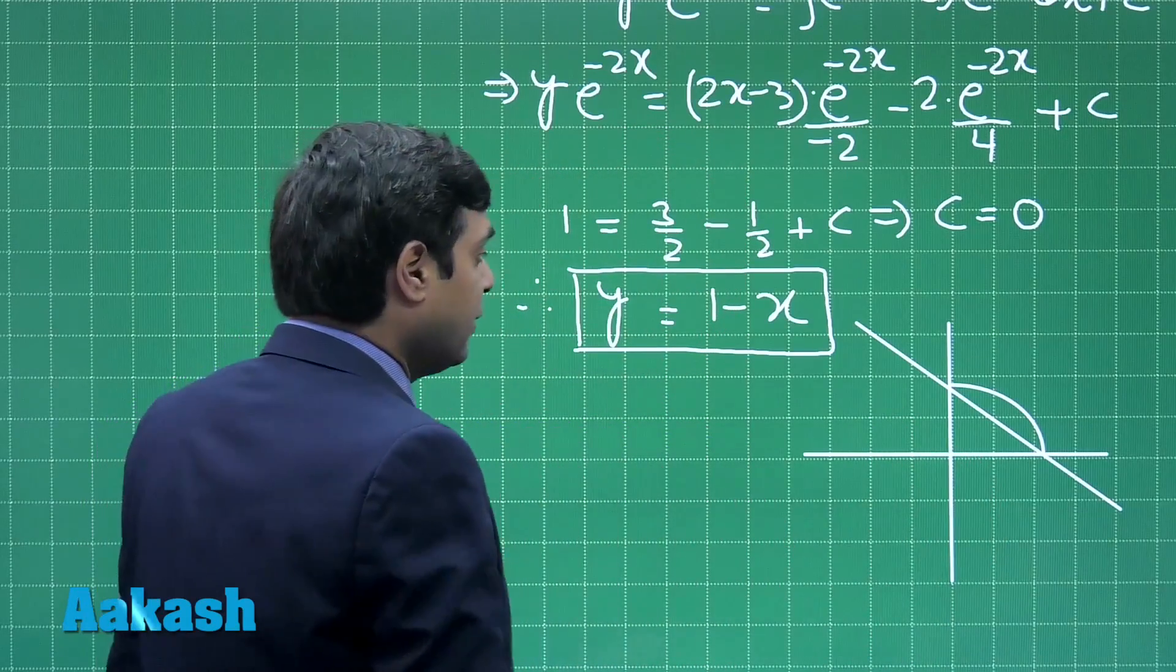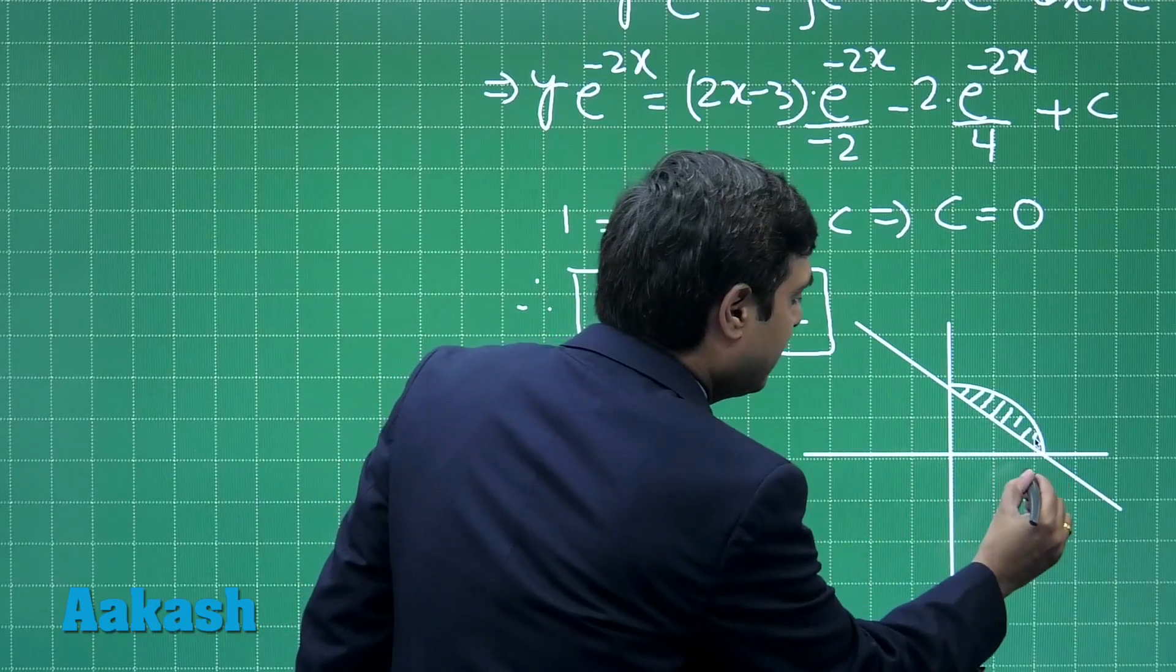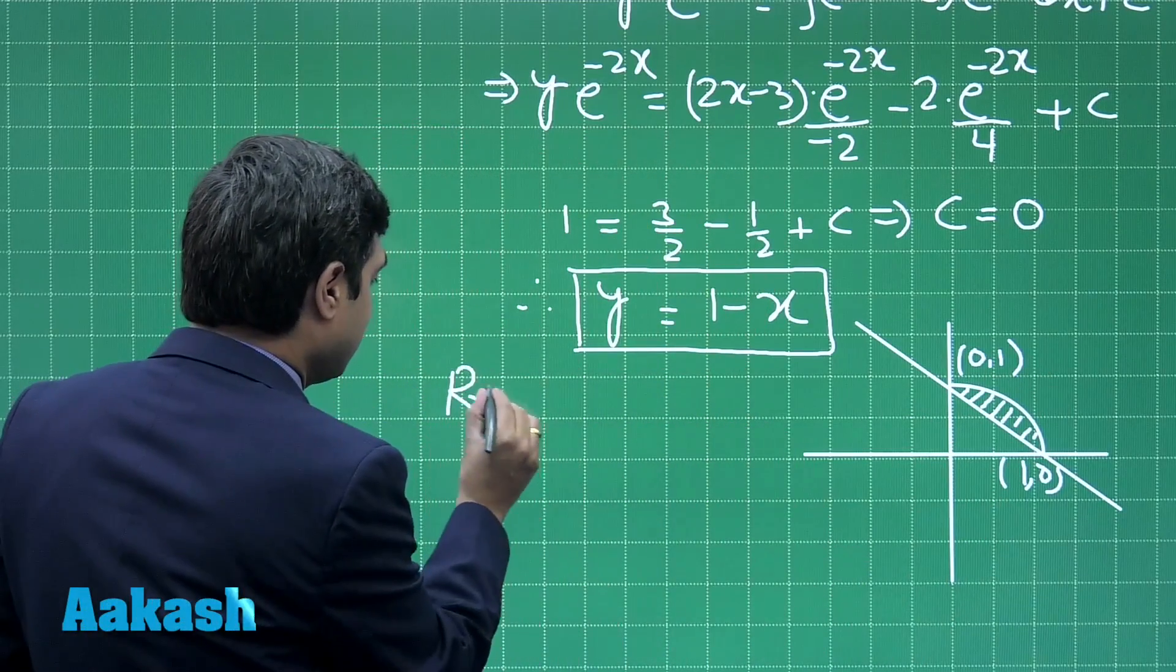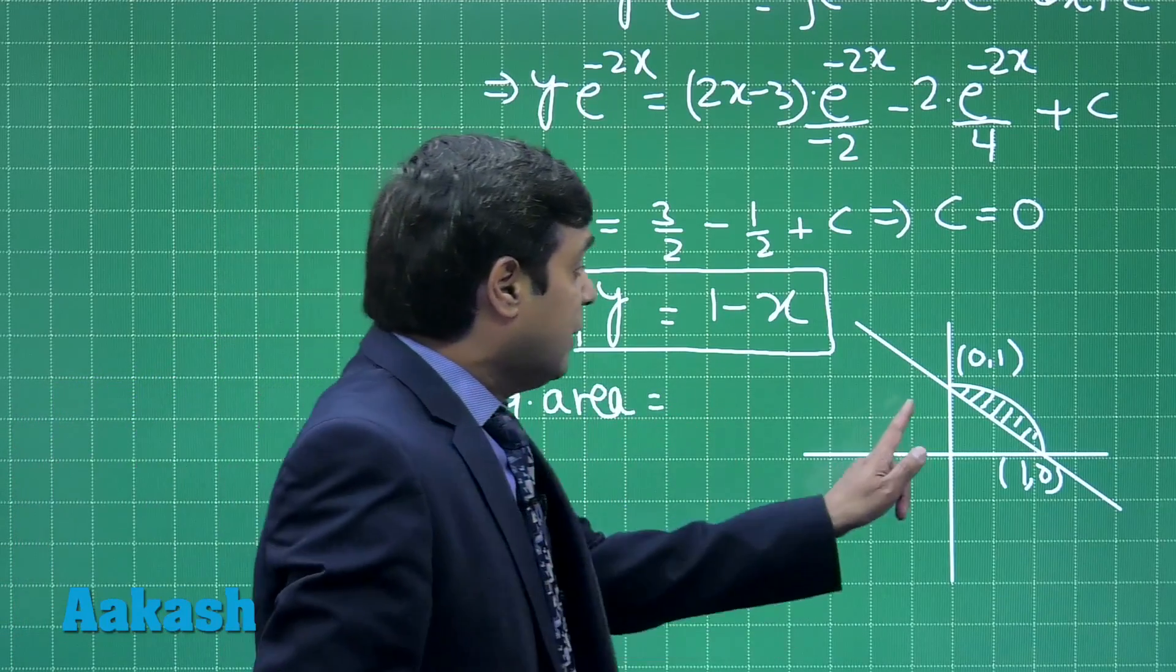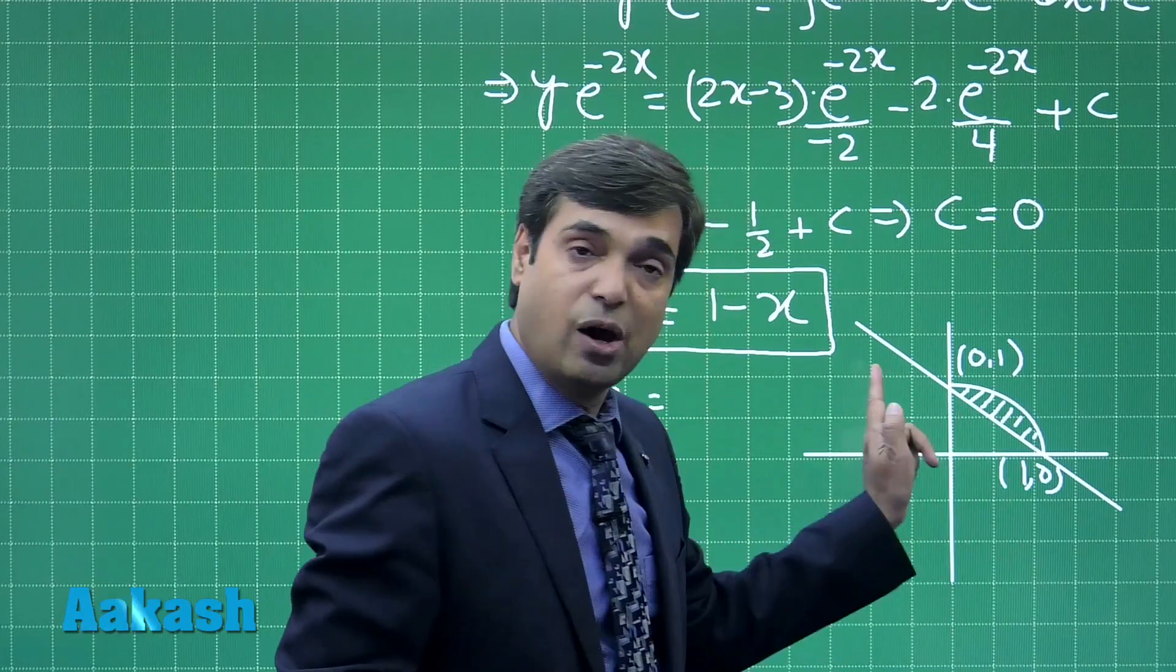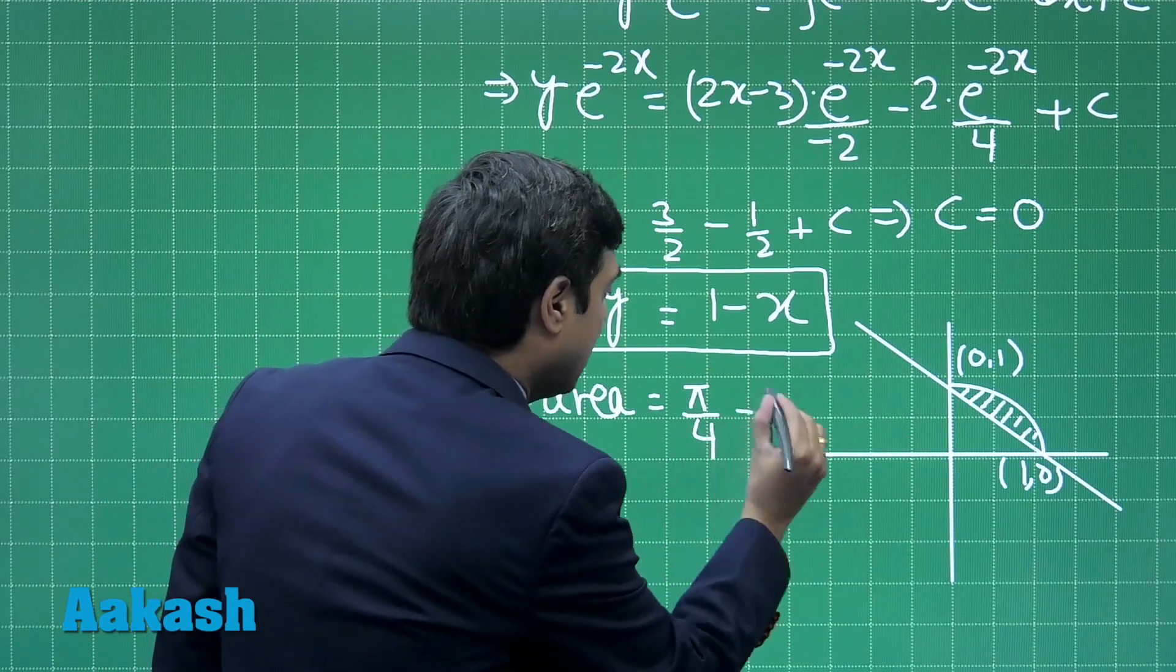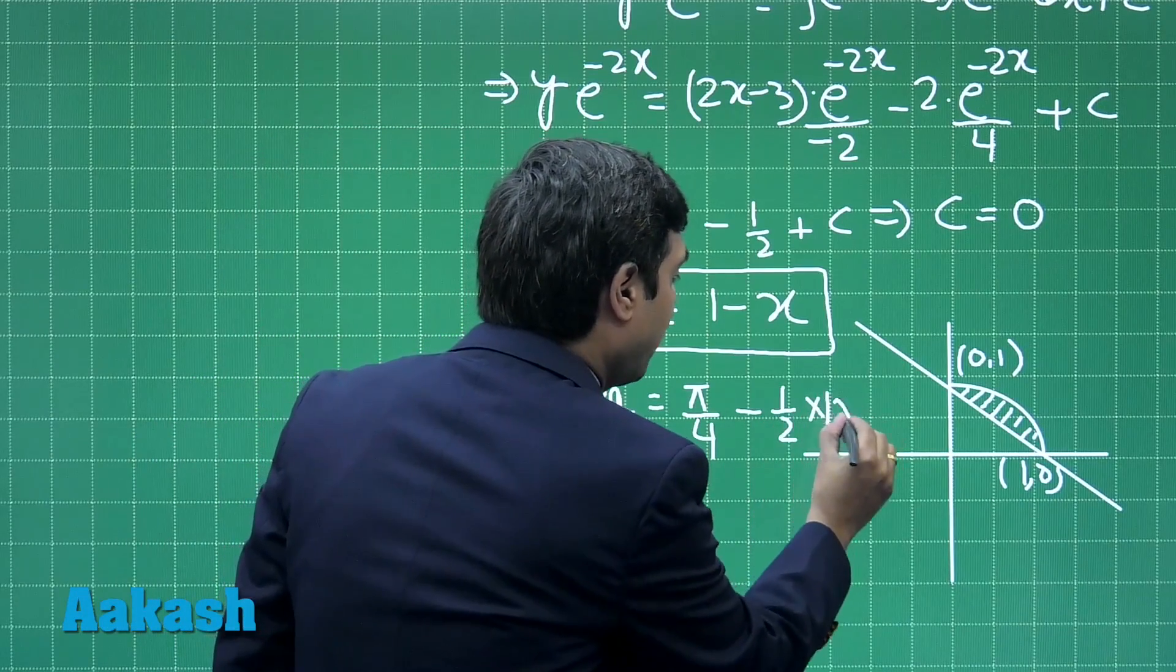Clearly we can see here the required portion is this one: this is (1, 0), this is (0, 1). The required area is equal to the area of the quadrant for the circle minus area of the triangle. This is πr², r is 1, divided by 4, minus area of the triangle, that is 1/2 times 1 times 1.